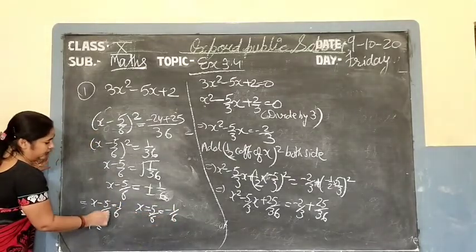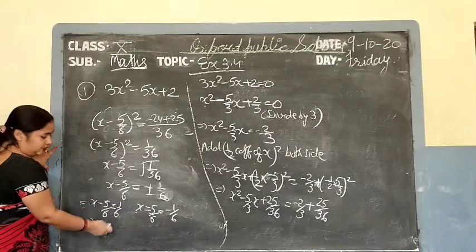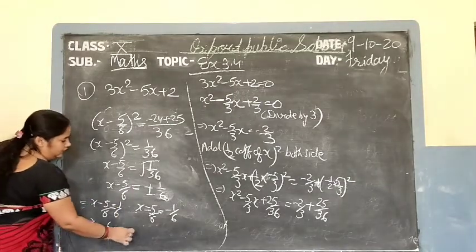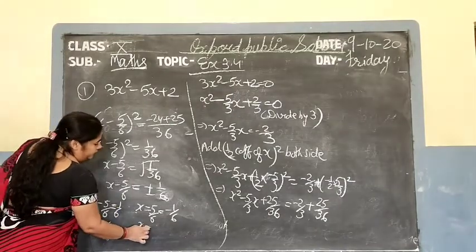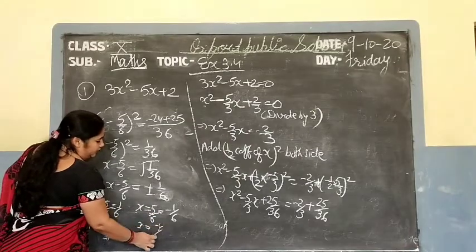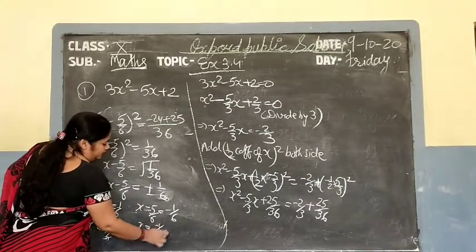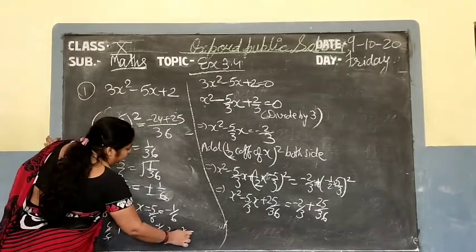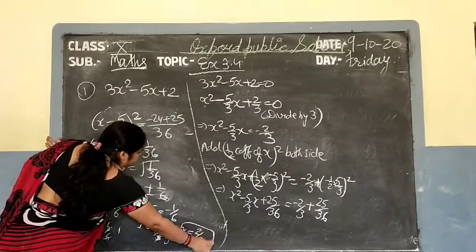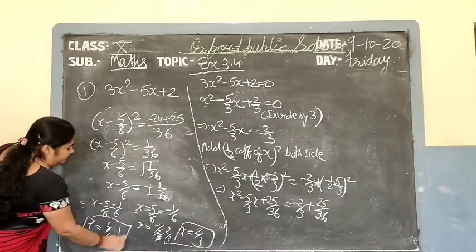Taking the plus case: x equals 5 upon 6 plus 1 upon 6 equals 6 upon 6, which equals 1. Taking the minus case: x equals 5 upon 6 minus 1 upon 6 equals 4 upon 6, which simplifies to 2 upon 3. So x equals 1 or x equals 2 upon 3.